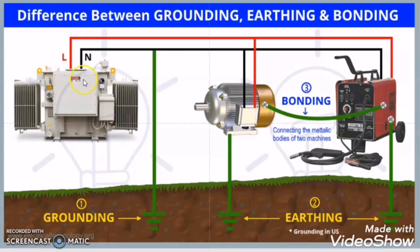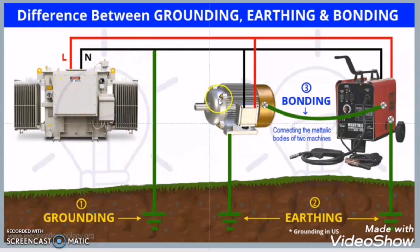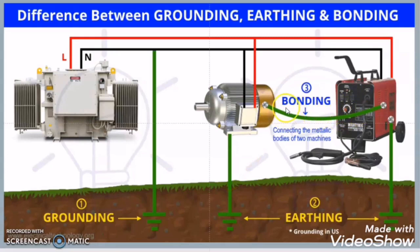Now let us summarize this video. When the neutral of the transformer or generator is connected directly to the ground, it is called grounding. When the body of the equipment is connected to the earth, it is called earthing. And when two electrical equipment bodies are connected together, it is called bonding.